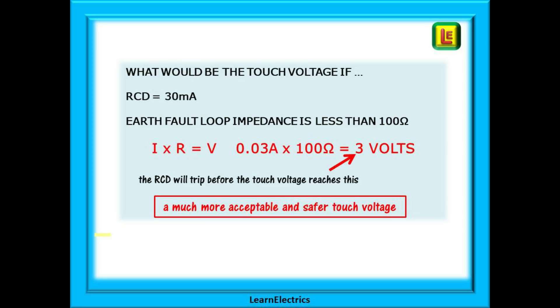And what would the touch voltage be on metal work in the property if we could make the loop impedance less than 100 ohms? Again, Ohm's law comes to help us. 30 milliamps times 100 ohms gives us just three volts, which is a much more acceptable and safer touch voltage. The RCD will trip and disconnect the supply before the voltage on the metalwork reaches even three volts.